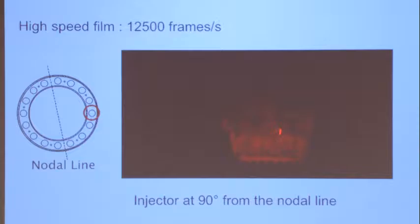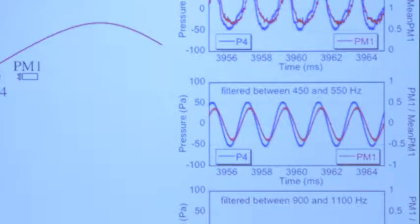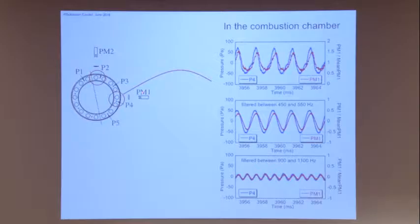Why is that so? Because here, due to these very strong pressure fluctuations, you also have strong velocity fluctuations which influence the flames and produce this elongation. At points further from the nodal line there is a good response and even a larger level of oscillation. What we see is that as you go away from the nodal line, you have a very large response of the flames.